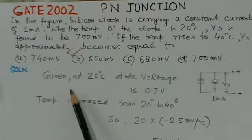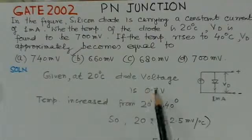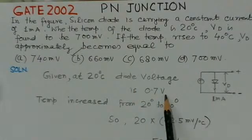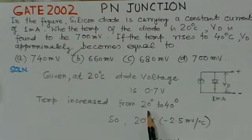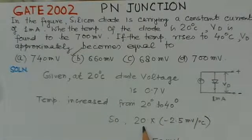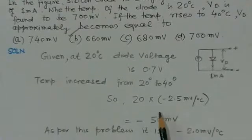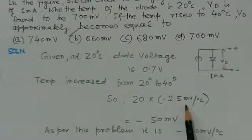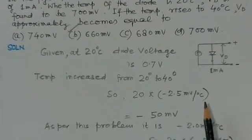Initially, at 20°C the diode voltage is 0.7 volts, or 700 millivolts. The temperature is increased from 20 to 40 degrees — an increase of 20 degrees. For 20 degrees, the decrease in voltage at 2.5 mV/°C would be 20 × 2.5 = 50 millivolts, giving a change of -50 millivolts.